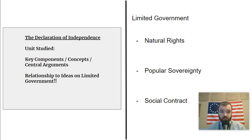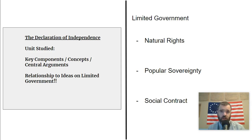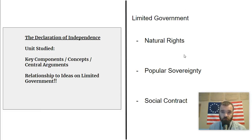In the Declaration of Independence, Jefferson is arguing that the king has not held up his end of the bargain, is infringing upon rights, and is acting in a way opposed to these philosophical beliefs. The Declaration of Independence does not create a government, but it lays the groundwork for the ideological and philosophical underpinnings of limited government in the American political system.